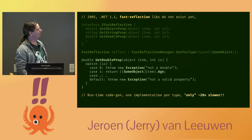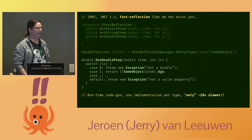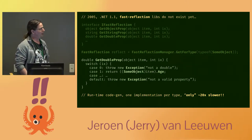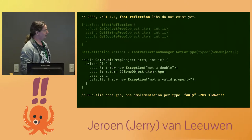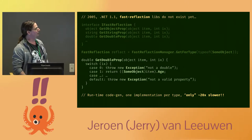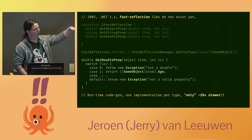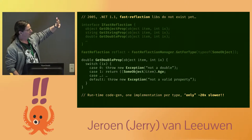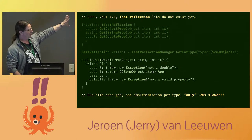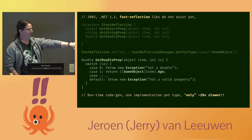I took a fairly basic approach. I created classes for each type I wanted to reflect on — runtime code-gen classes that are basically big switch statements that can return the values of properties. This was close but not quite good enough yet.